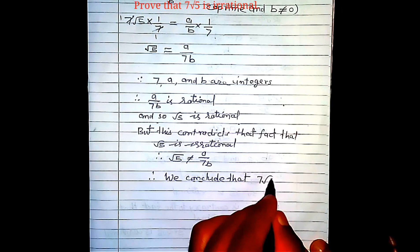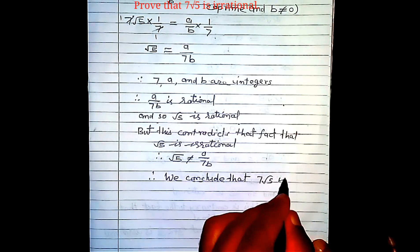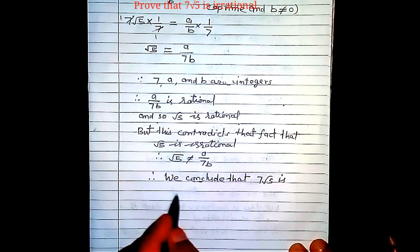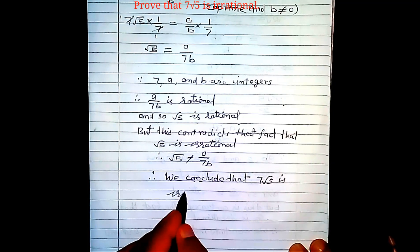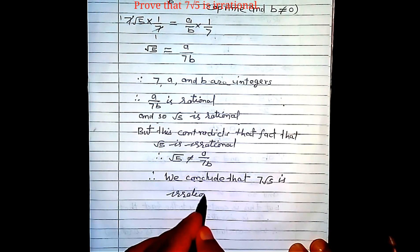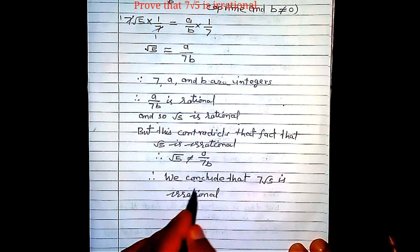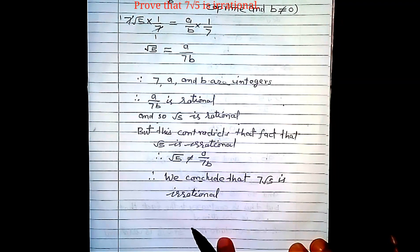Therefore, we conclude that 7√5 is irrational.